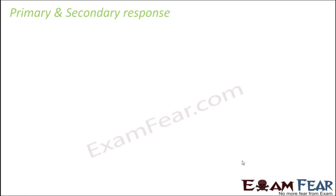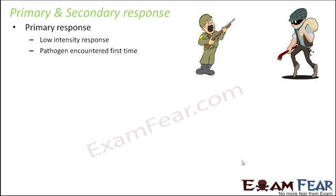The primary response is a low-intensity response because the pathogen is encountered for the first time. A good example is vaccination, where a small dose of the disease-causing pathogen is introduced into the body. The dose is so small that it will not cause a major disease, but the body will recognize it as a threat and the immune system will give a low-intensity response.